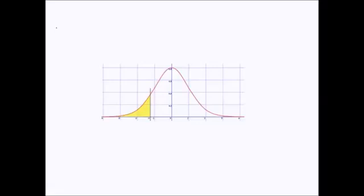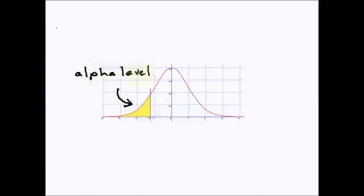This is Stephanie from StatisticsHowTo.com and in this video I will be showing you how to calculate an alpha level. This yellow area here is a rejection region and it is expressed with an alpha level. The alpha level is related to a confidence level and it is chosen by you or it might be given to you in a question.